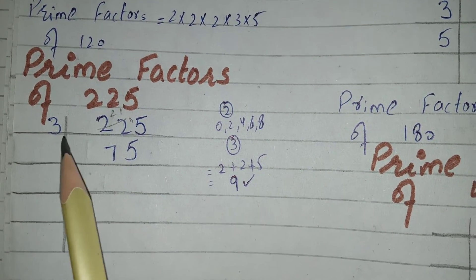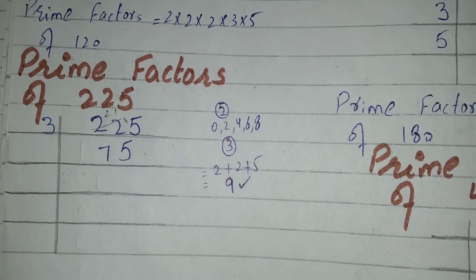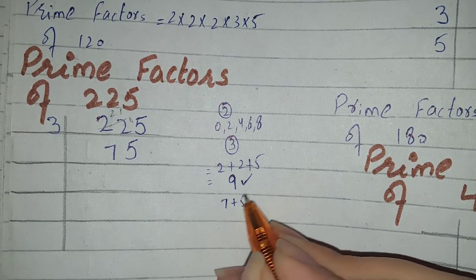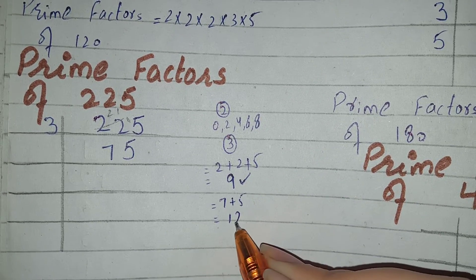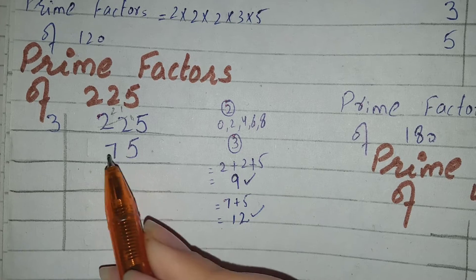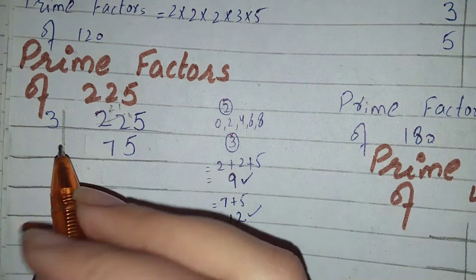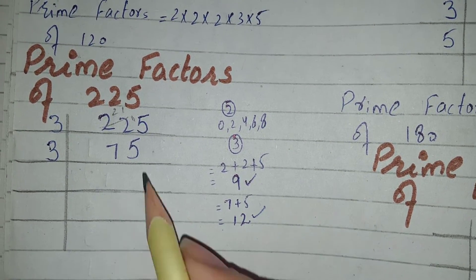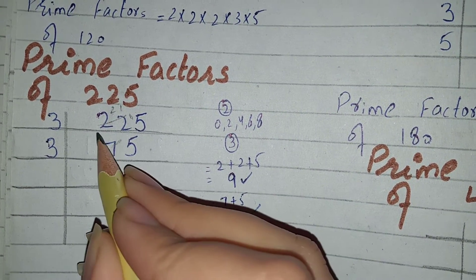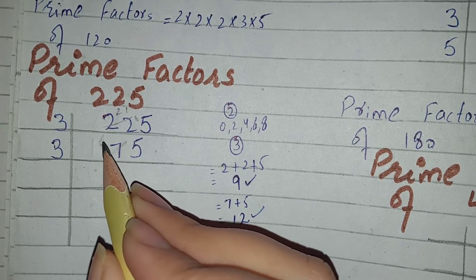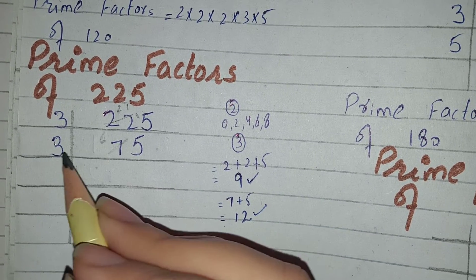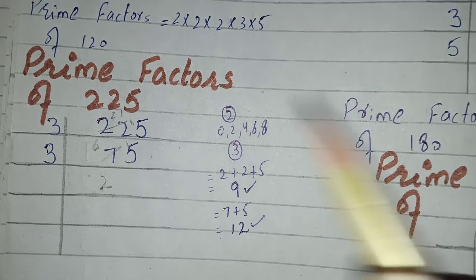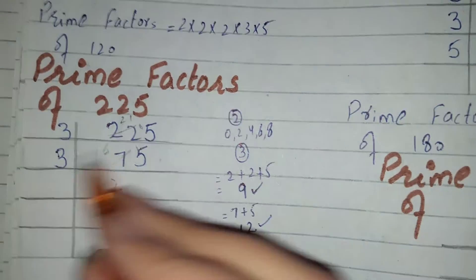Can we again take 3 here or not? To check, add the digits of this number: 7 plus 5 equals 12. 12 is divisible by 3, so this number will also be divided by 3. We will take 3 here. If you know the answer directly, write it; otherwise, cut the 7 and make it 6. 3 twos are 6. When I cut 7 and make it 6, the remainder shifts here — that is 1 — and it becomes 15. 3 fives are 15.